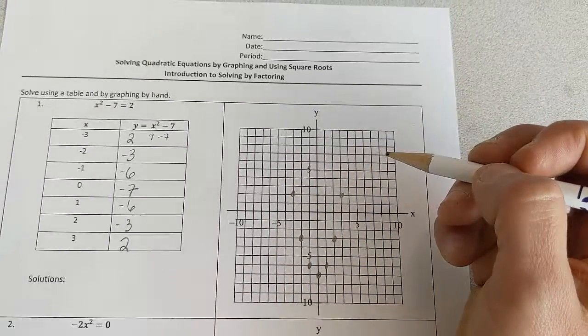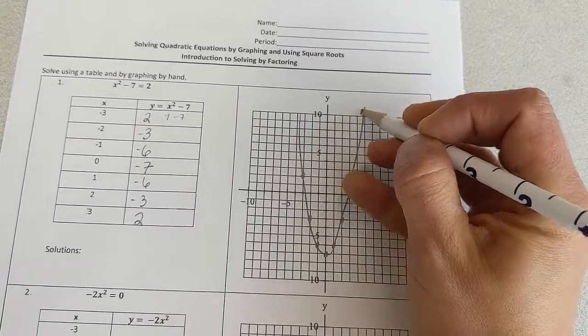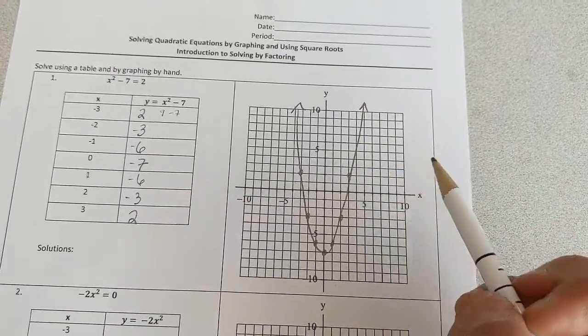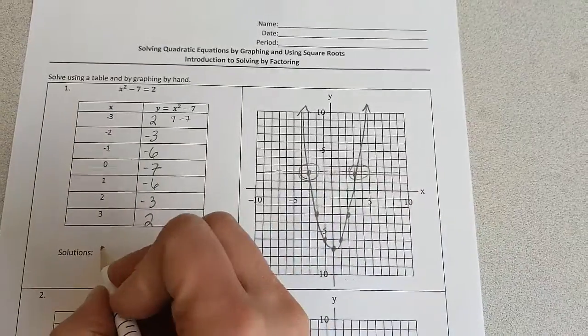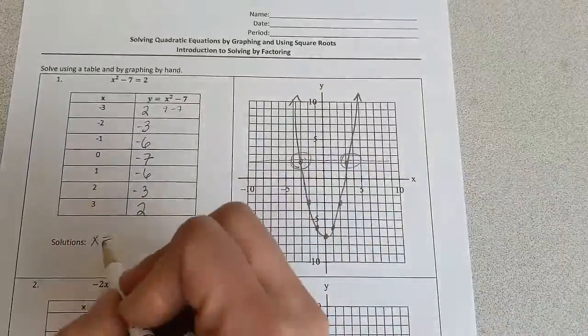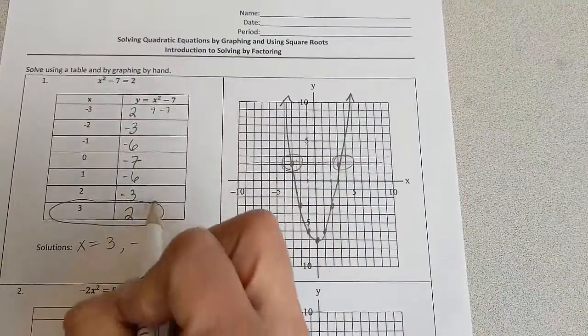Okay, so our parabola opens up, but it's been shifted down 7 spaces. We're looking for where our y value is equal to 2, and we'll see that our solutions then are x equals 3 and negative 3. We can also see that in the table.